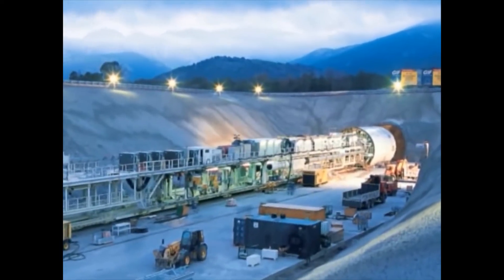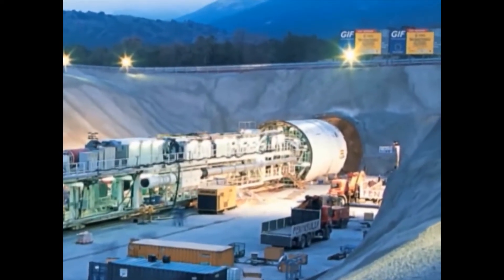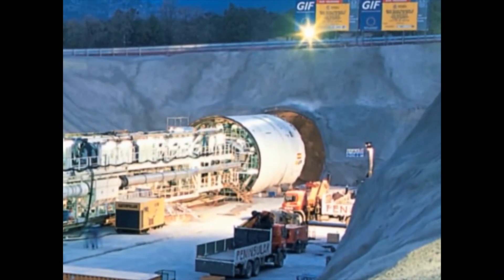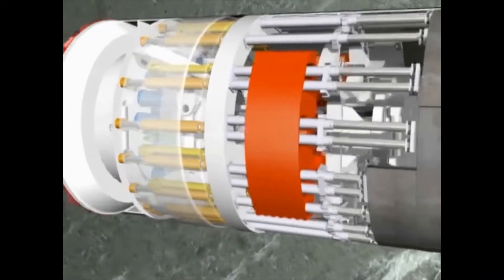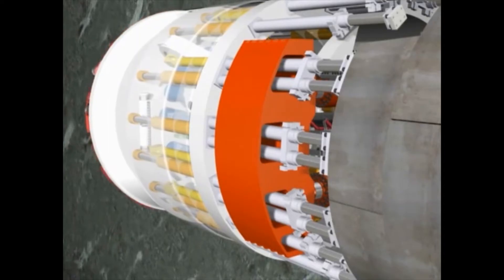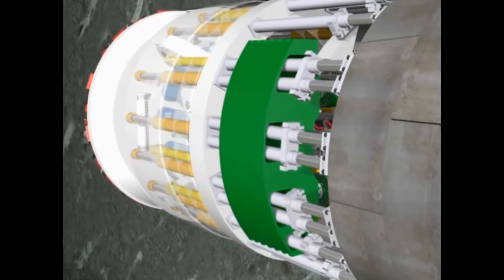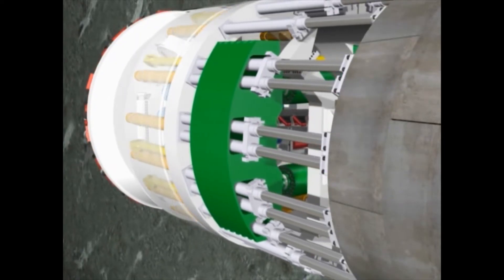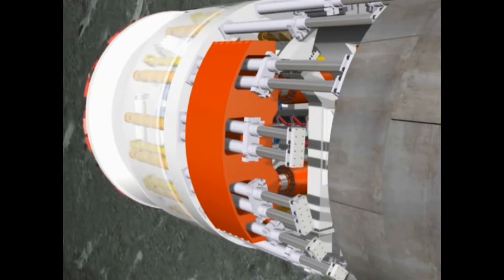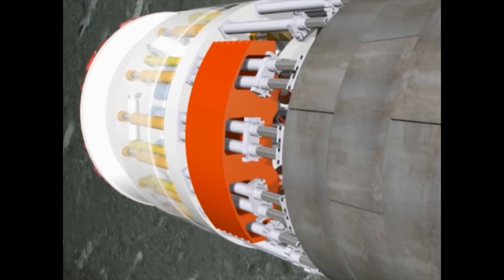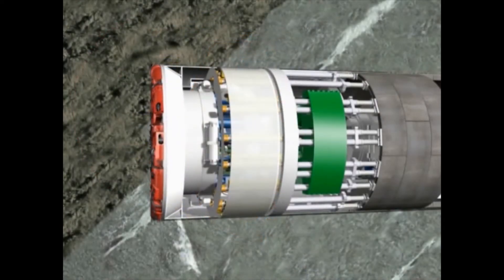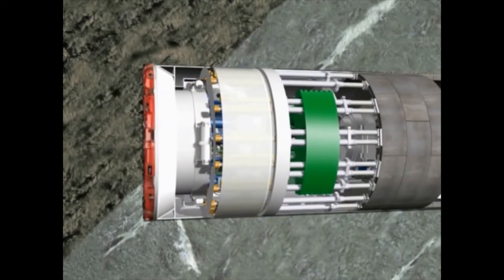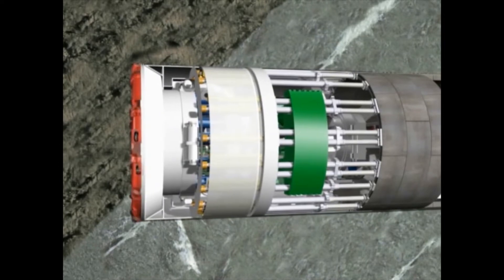The two double-shield machines rank among the technically most challenging tunnel-boring machines in tunneling. They can be flexibly modified to the respective geology of the tunnel line, since they combine gripper principle and segment lining in a specifically coordinated process. Thereby, this type of machine is well-suited for the excavation of long tunnels in hard rock with geological fault zones.